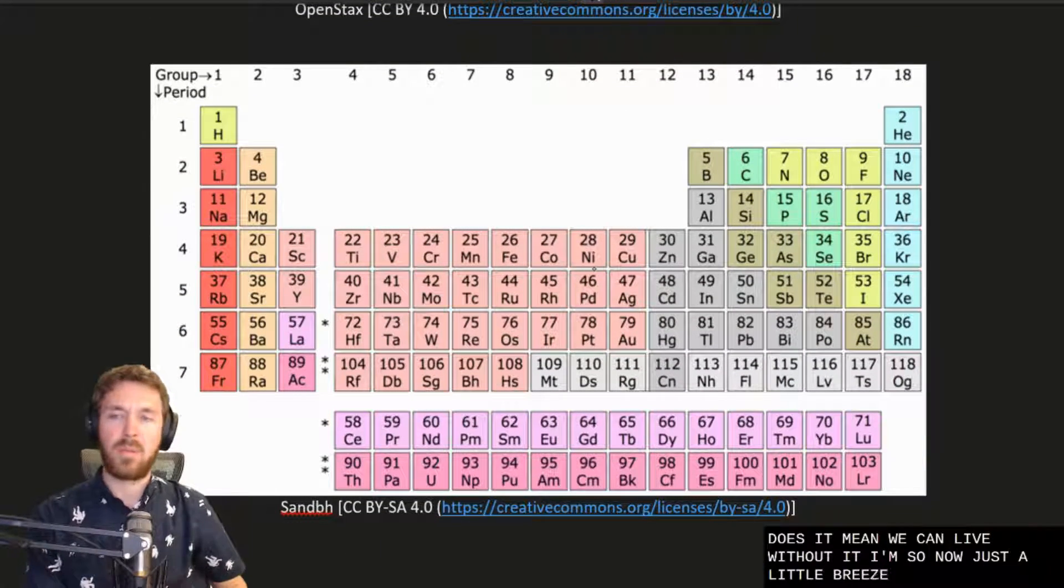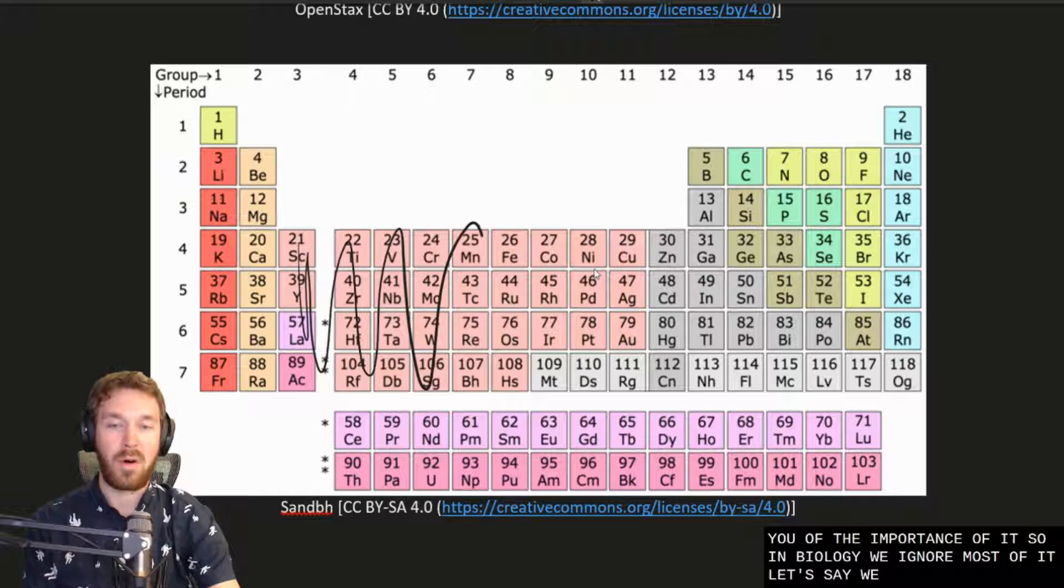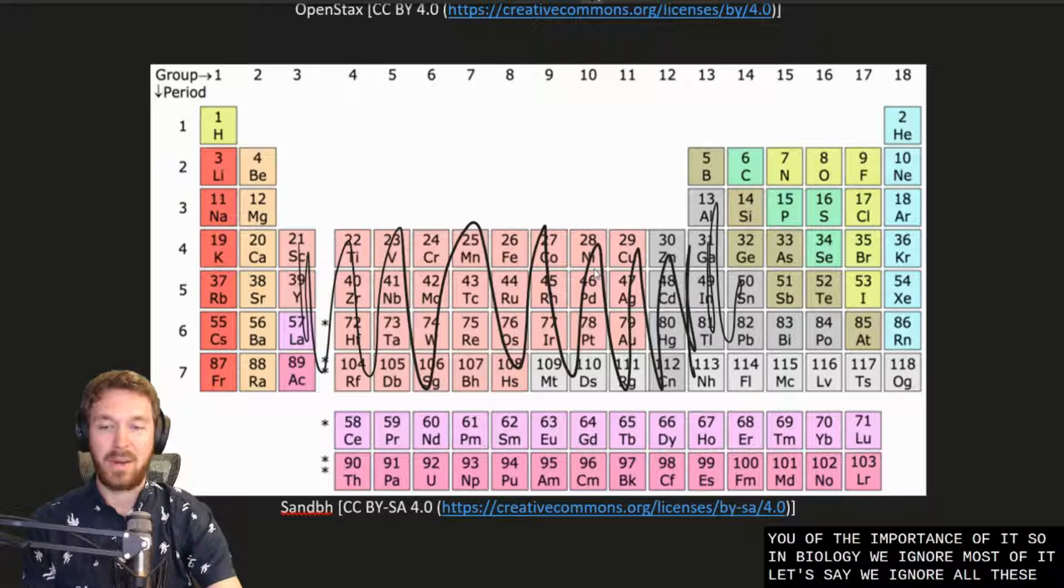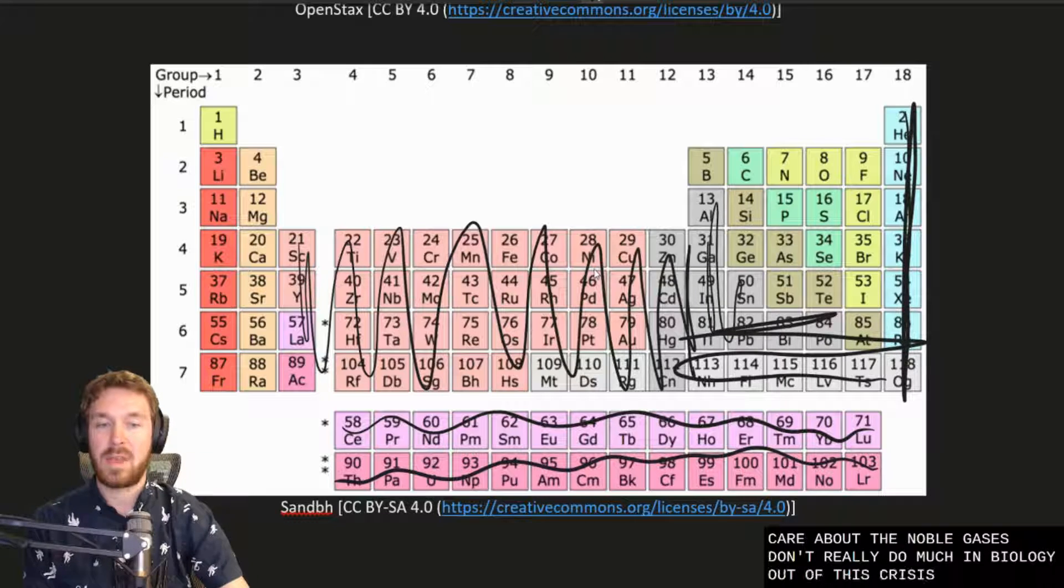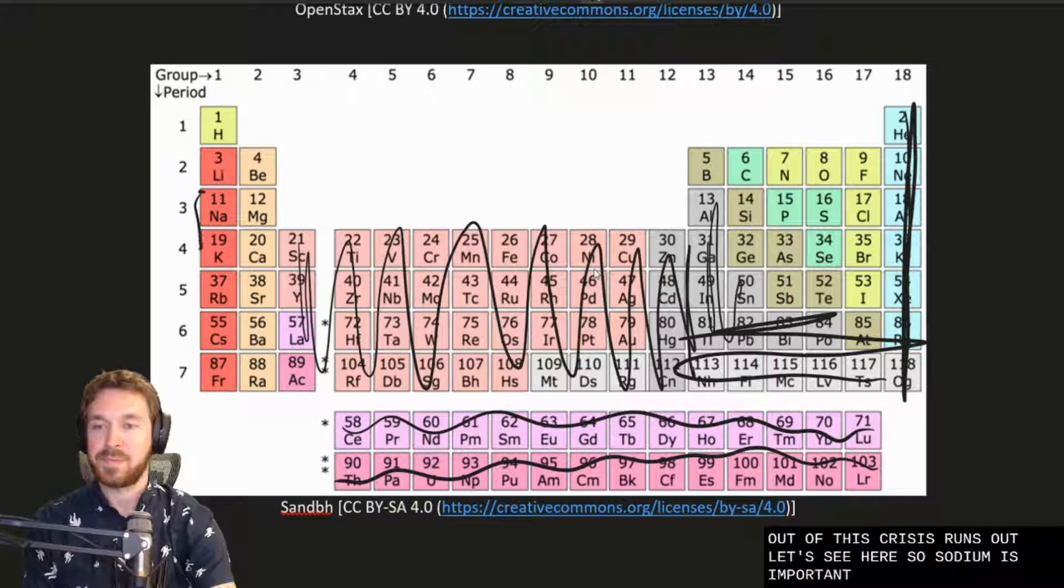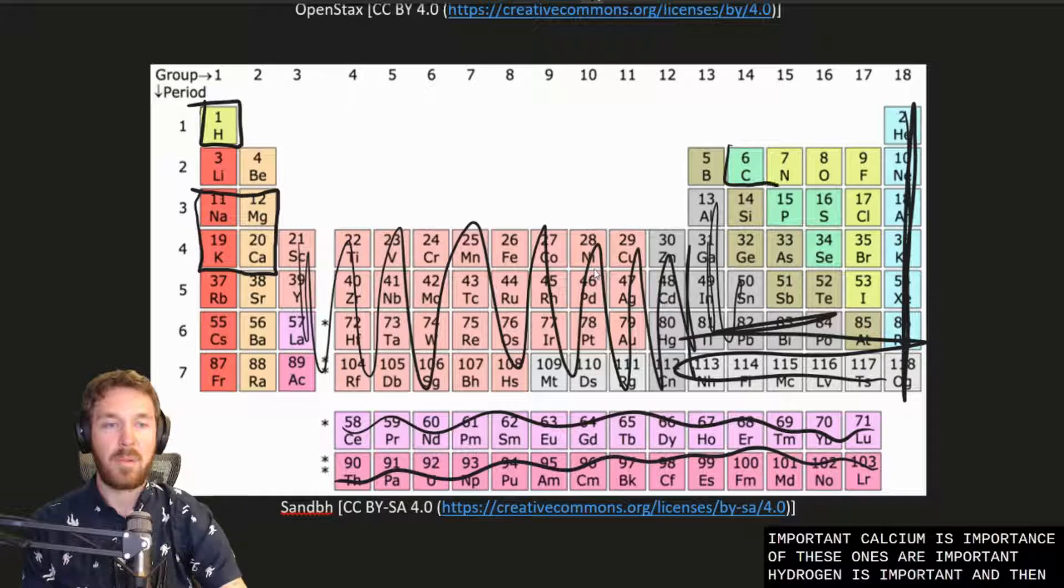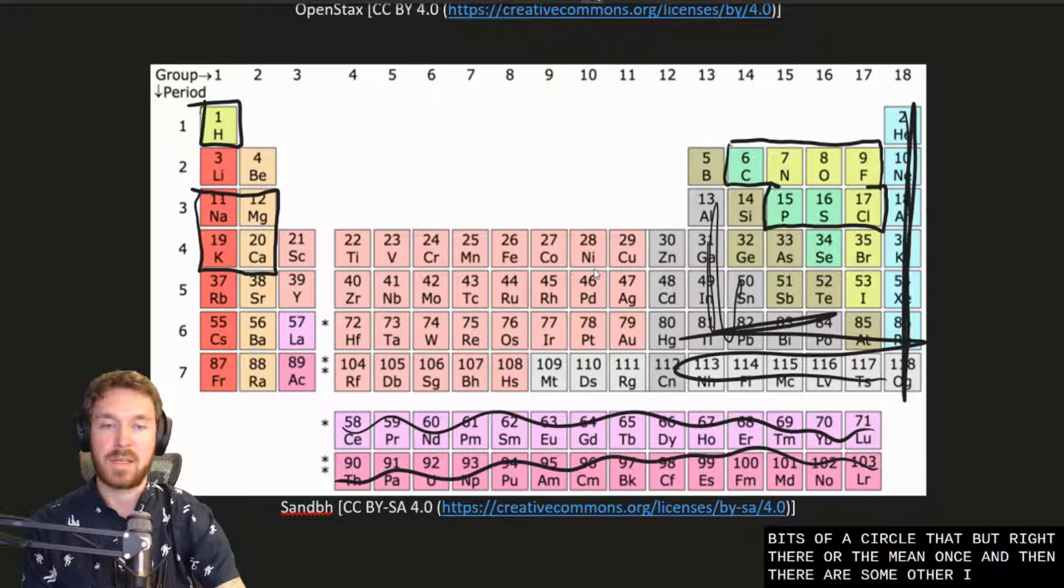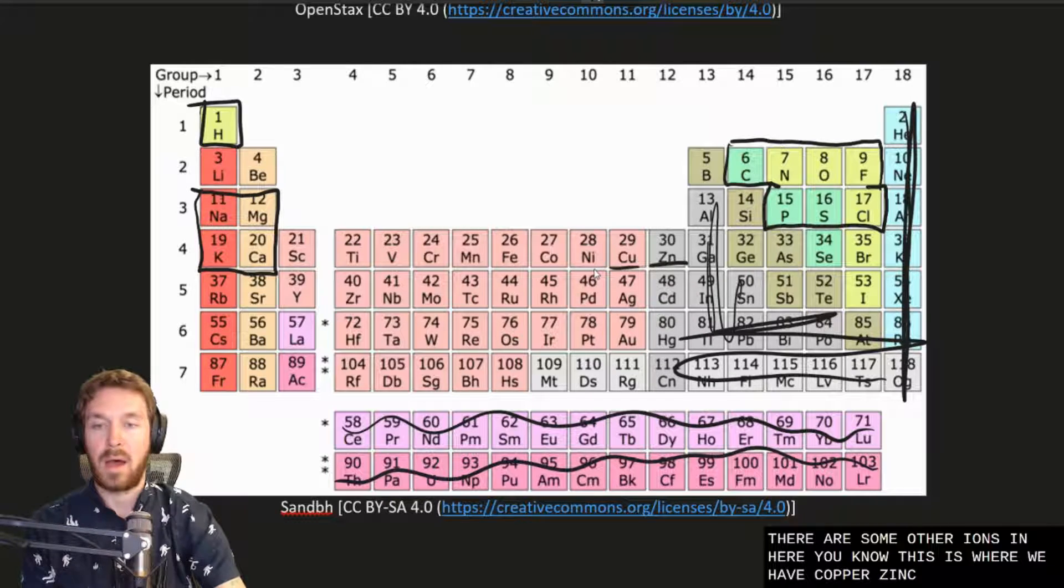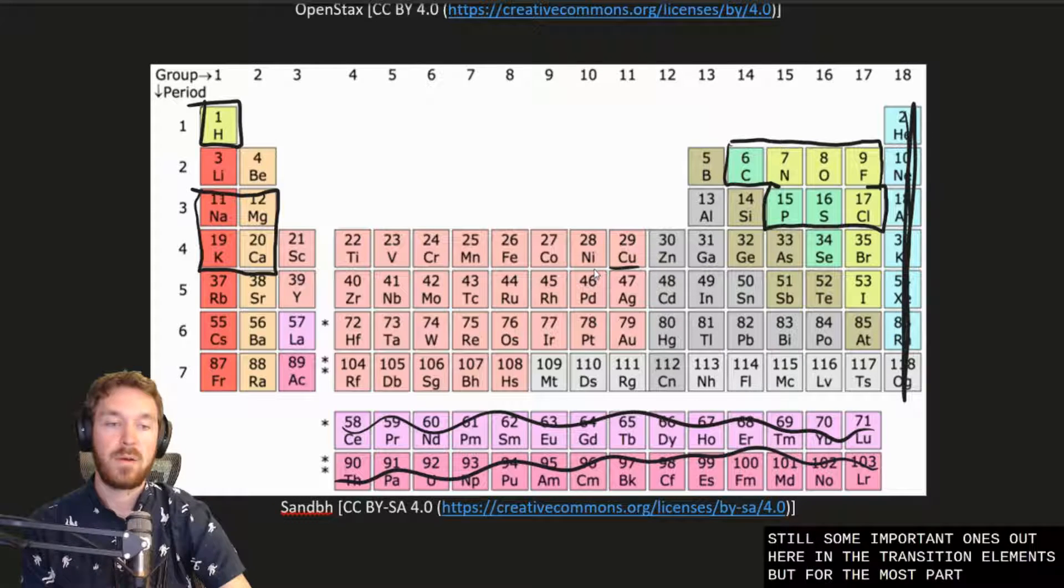So now just a little brief summary of the periodic table just to remind you of the importance of it. So in biology we ignore most of it. Let's say we ignore all these. We ignore these ones no one cares about. These ones we don't care about. The noble gases don't really do much in biology. Let's cross these ones out. Let's see here. So sodium is important. Potassium is important. Calcium is important. So these ones are important. Hydrogen is important. And then carbon, phosphorus, sulfur, chlorine, and fluorine a little bit. So we'll circle that. But right there are the main ones. And then there are some other ions in here. You know this is where we have copper, zinc, where there's our iron. So there are still some important ones out here in the transitional elements. But for the most part we just care about the ones I circled here.